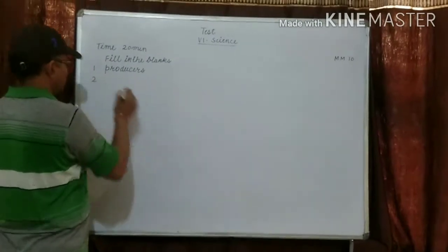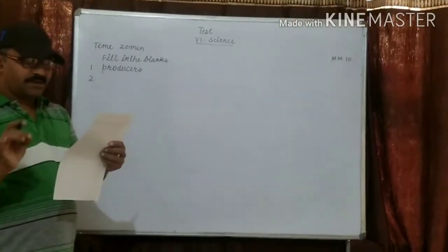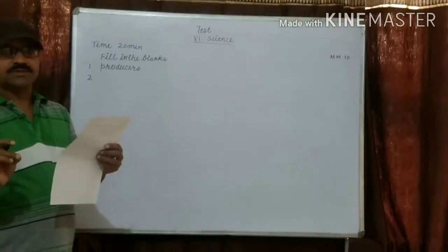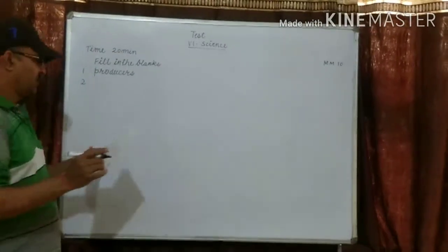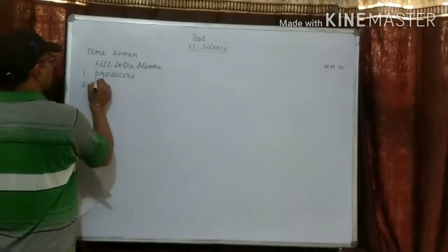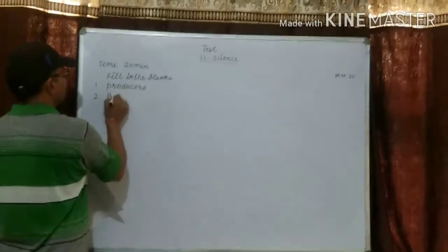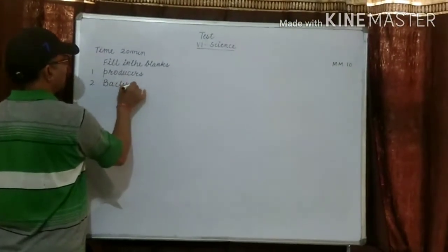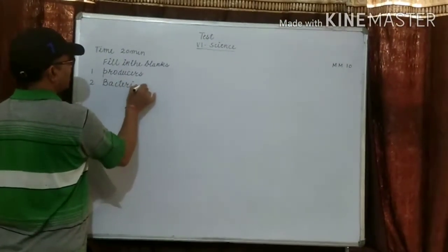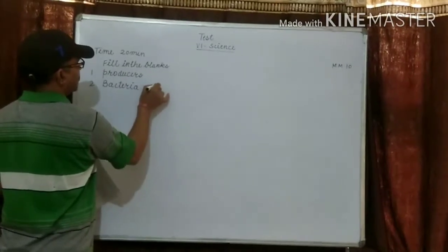Second: dash and dash are decomposers. Answer is bacteria and fungi.